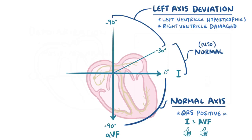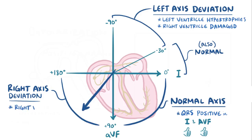If the opposite happens and the vector's negative in lead 1 and positive in AVF, then it's in this quadrant between plus 90 and plus 180 degrees, and we call that right-axis deviation. That can happen when the right ventricle hypertrophies, or when the left ventricle is damaged and loses healthy tissue.